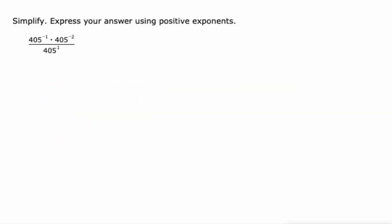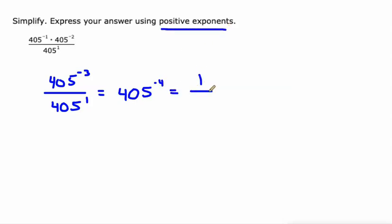Really no difference here, other than the multiplication is occurring on top first. We'll simplify the numerator a little bit: 405 to the negative third power—negative 1 plus negative 2 is negative 3. Then let's subtract: negative 3 minus 1 is negative 4, but positive exponents, so we're gonna make this 1 over 405 to the fourth. If I would have just done 1 minus negative 3, that is positive 4, so 1 over 405 to the fourth.